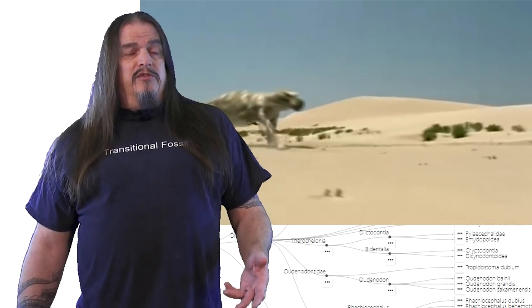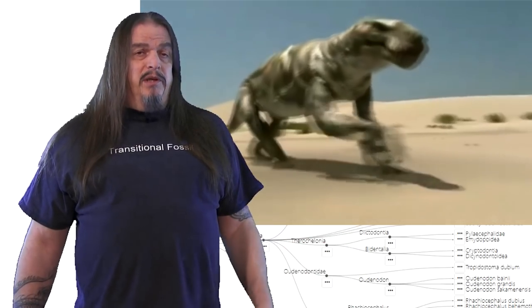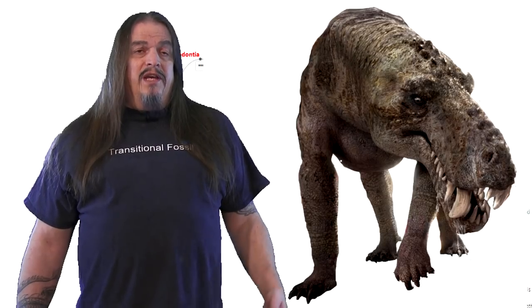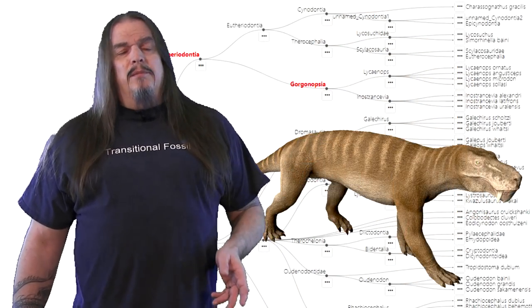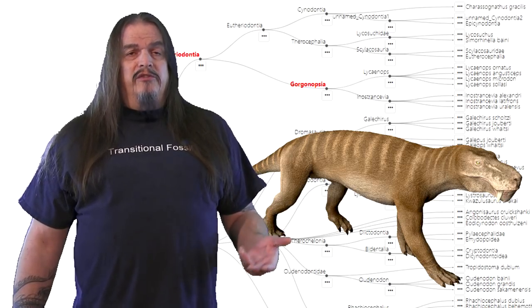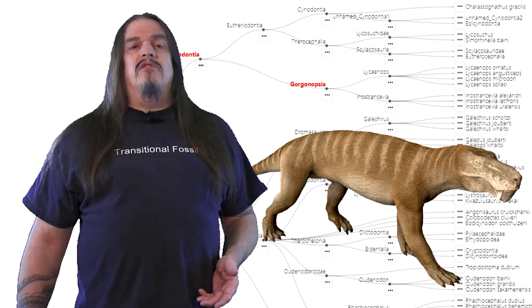Gorgonopsids, however, apparently used them. Inostrancevia was the size of a grizzly. Though it couldn't run as far or as fast, it was probably every bit as strong. As frightening as this animal was, it and many smaller but similar-looking versions riddled throughout this tree demonstrate the transition we've been looking at since the last episode, but maybe haven't noticed until now.